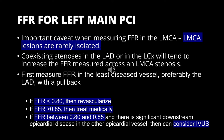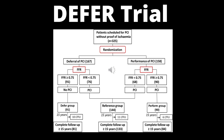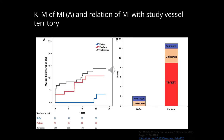In the DEFER trial, 325 stable ischemic heart disease patients with intermediate coronary stenosis were included. FFR was calculated in all 325 patients. Patients with FFR less than or equal to 0.75 received PCI — this was the reference group. Patients with FFR more than 0.75 were randomized to either PCI (treated group) or medical therapy (deferred group). At 5 years, the risk of death and MI was similar in both the deferred and treated groups.